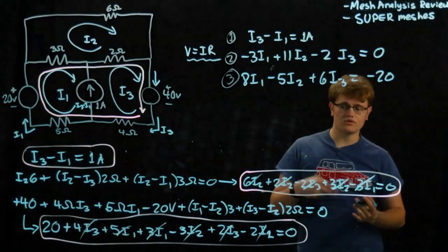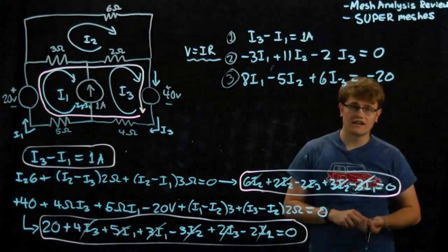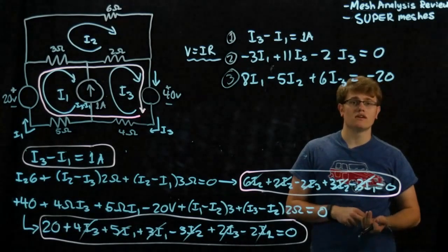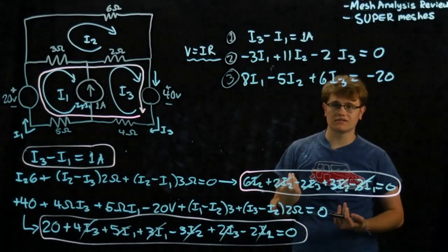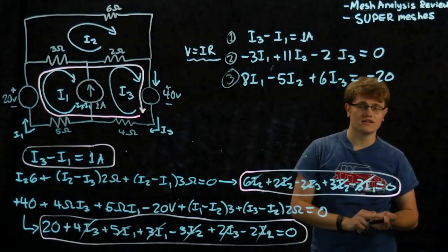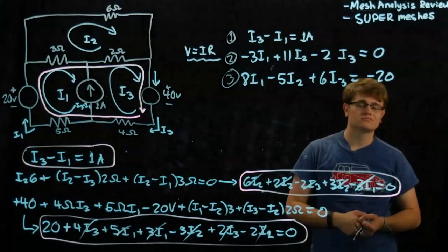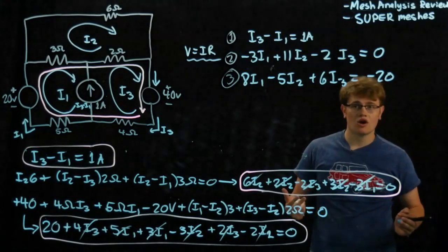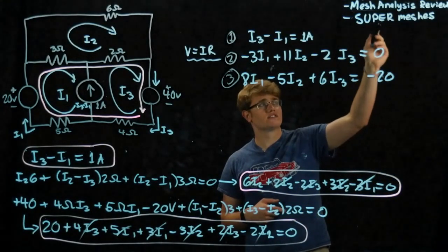Now you could substitute, eliminate, or use other algebraic methods to solve — you'll get the right answer. But there's a faster way if you have a graphing calculator, which on an exam can take 30 seconds tops if you type it in quickly. Next week we'll be doing another video explaining how to solve these equations efficiently. Hope you learned something here about super meshes and mesh analysis.